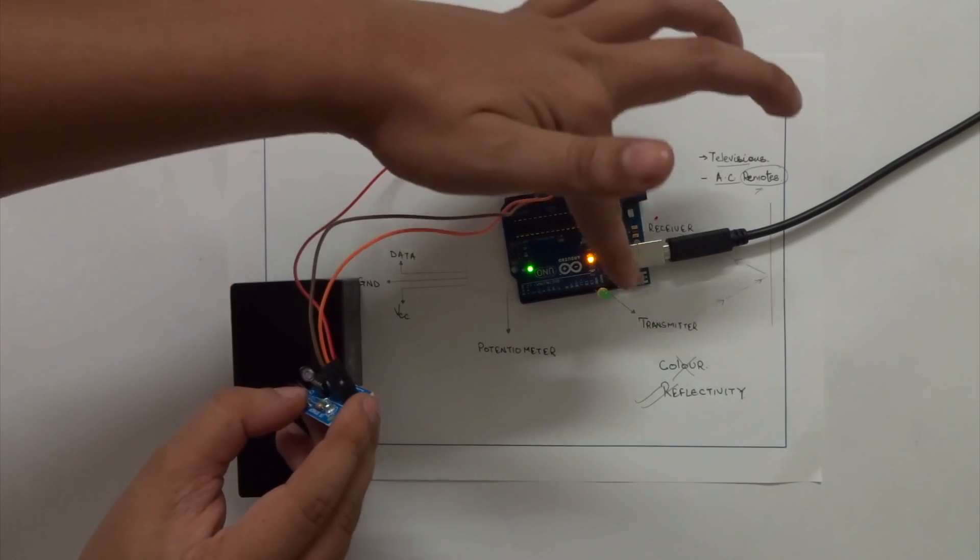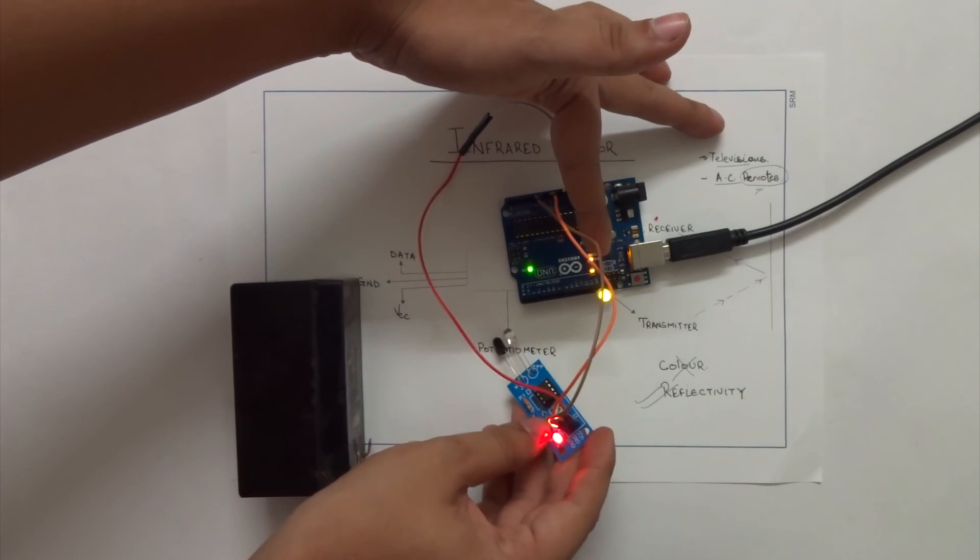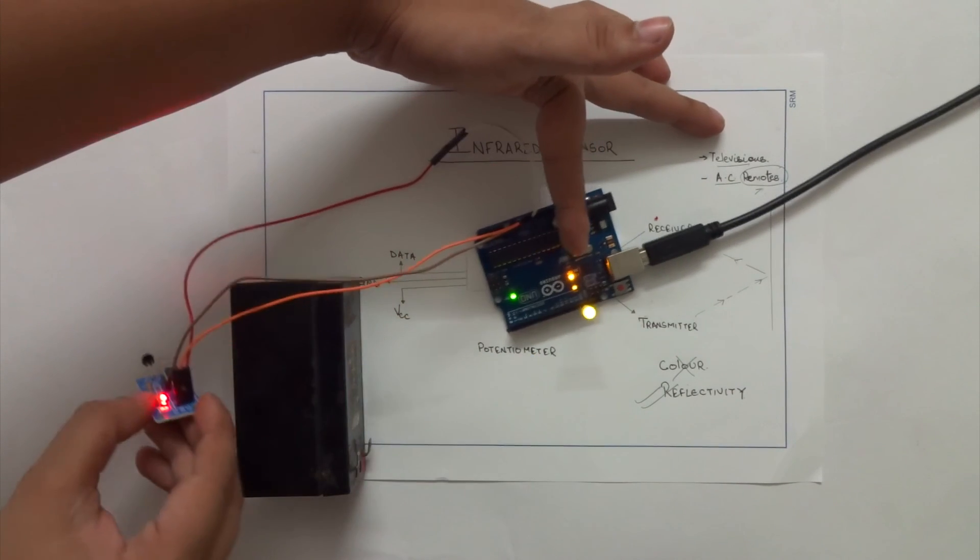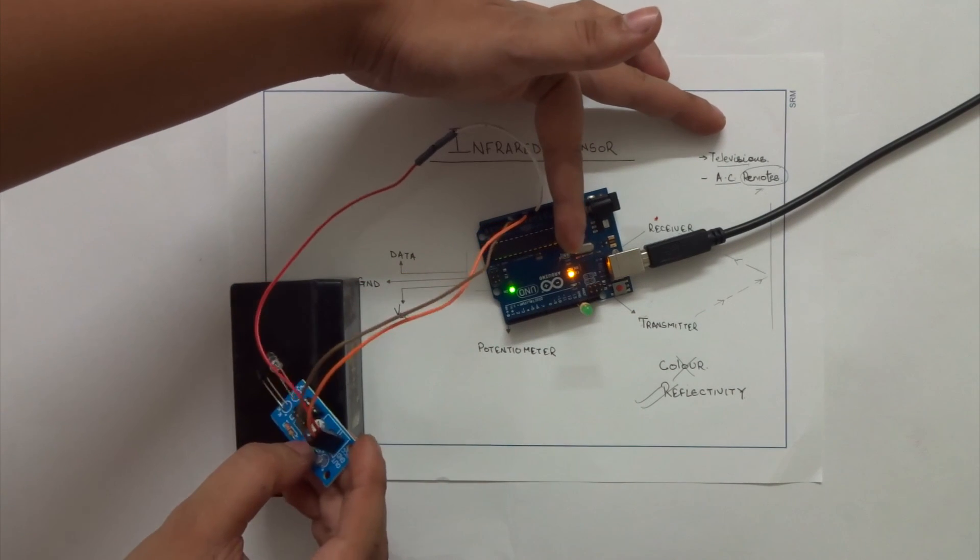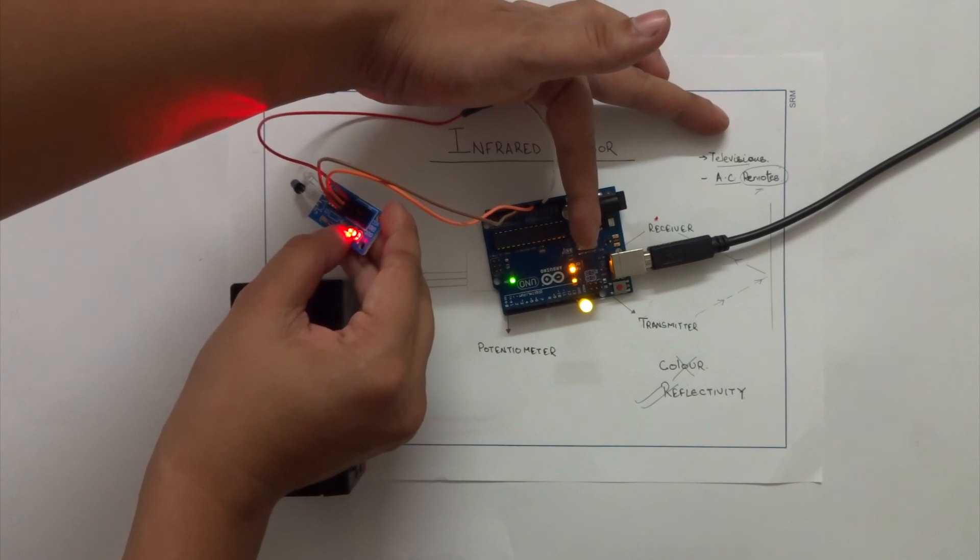If the sensor detects any dark object, the LED doesn't glow but when it comes in range with a white object, the LED starts glowing. You can very well see here when the sensor is against a black object, the LED is not glowing but when it comes in range with white object, the LED starts glowing.